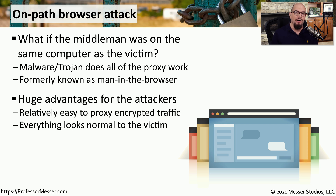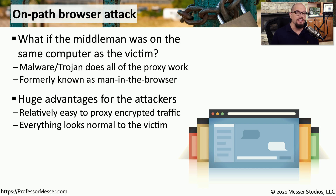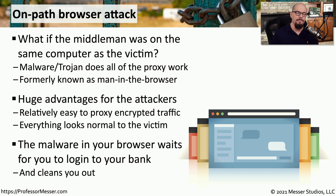Having malware on the same machine perform the on-path attack provides significant advantages. Over the network, encrypted data relayed through a secondary device would still be encrypted — there's no way to decrypt it without either side knowing. But if you're on the same computer as the victim, you can see all data in its raw, unencrypted form. These on-path browser attacks sit in the background, wait for you to log into your bank, and then begin transferring information out of your account.